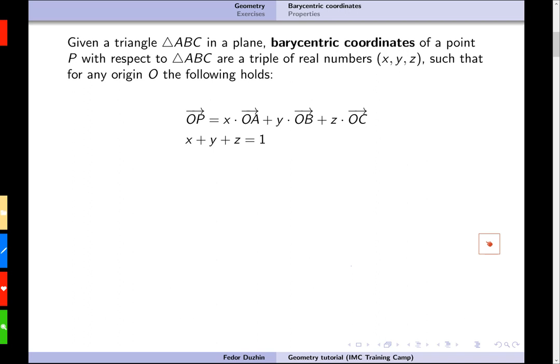This tutorial is about barycentric coordinates. What are barycentric coordinates? If we have three points in a plane, well, rather a triangle, so like first point, second point, and third point, so A, B, and C.